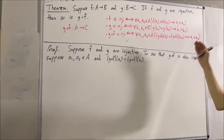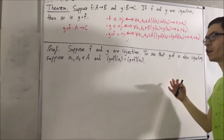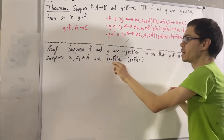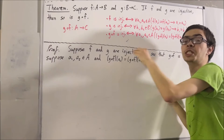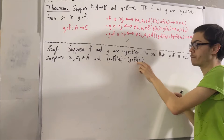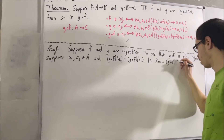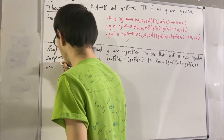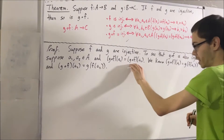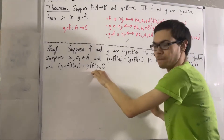We want to deduce that a1 is equal to a2. To start, recalling the definition of composition, g compose f of a1 is the same as g of f of a1, and similarly g compose f of a2 is the same as g of f of a2. So because g compose f of a1 equals g compose f of a2, this means g of f of a1 equals g of f of a2.